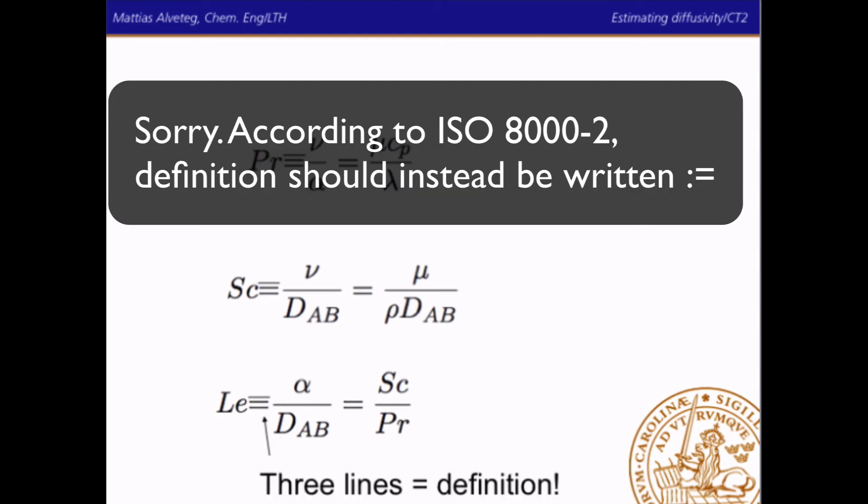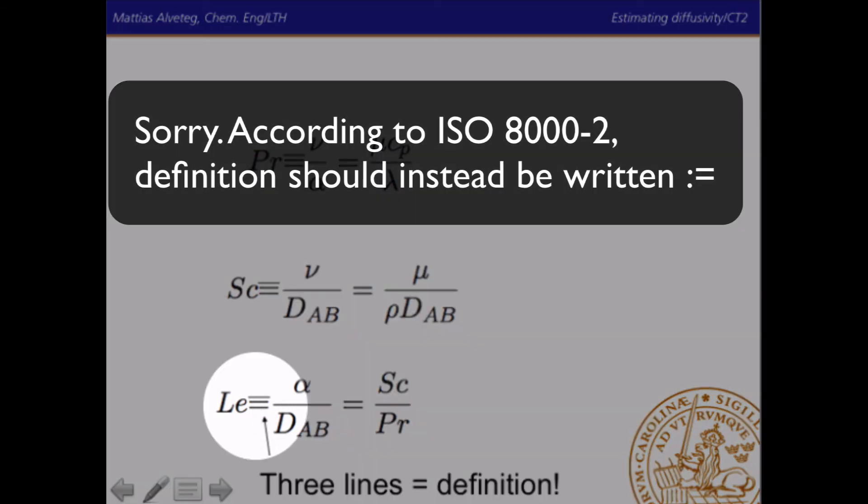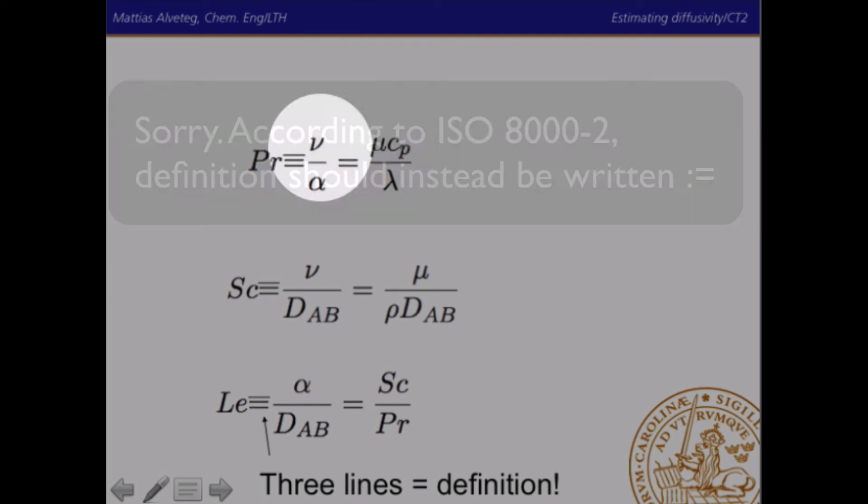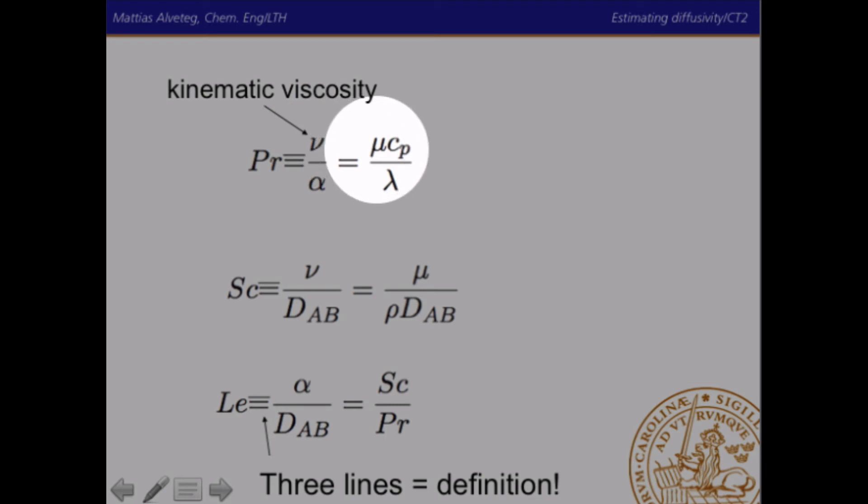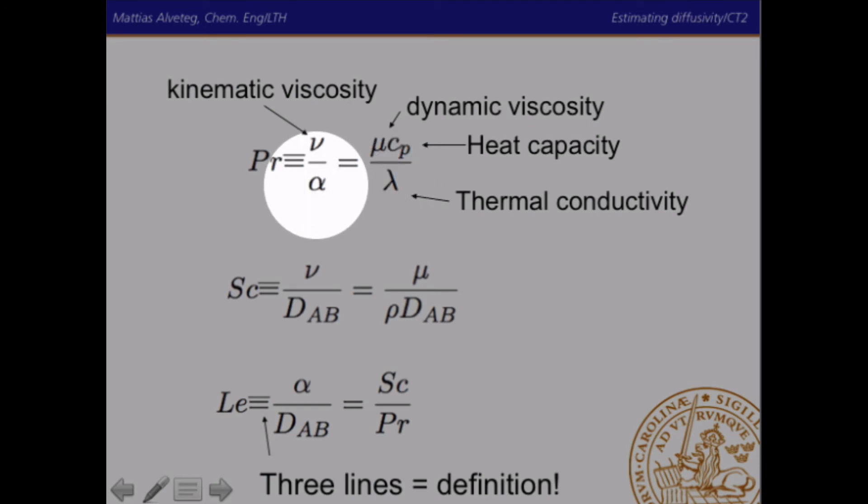Let's look at those in a bit more detail. We have three lines here. And that's because this is a definition. This one up here. Nu is the kinematic viscosity. Mu is the dynamic viscosity. So viscosity, but in a different unit. Cp is the heat capacity. Lambda is the thermal conductivity. And alpha we use for thermal diffusivity. And then we have the mass diffusivity for A and B. And the density, rho.